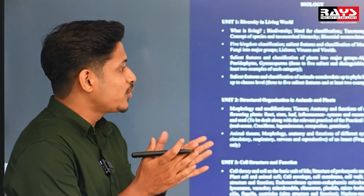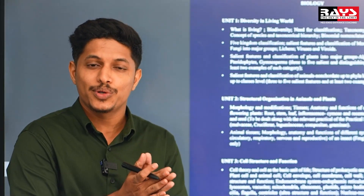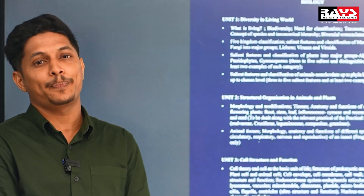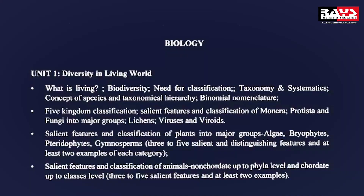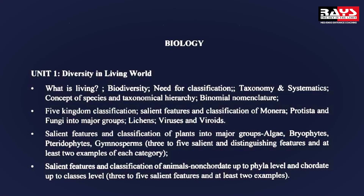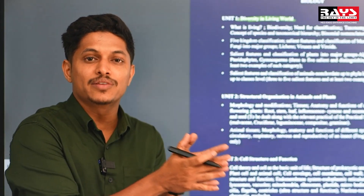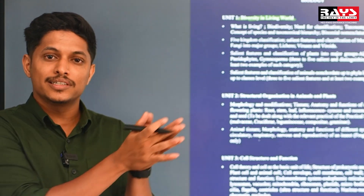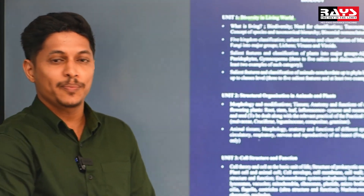Now we are going to talk about the NET 2024 syllabus. In the first unit, biology begins with Unit 1 which is diversity in the living world. The first chapter is the living world from zoology, followed by the animal kingdom. There is also biological classification and plant kingdom from botany.